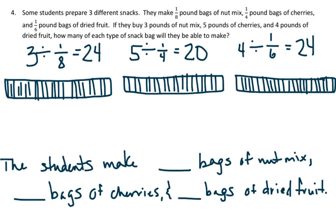So this one was the nut mix, so we have 24 bags of nut mix. We have 20 bags of cherries. And then we have 24 bags of dried fruit.